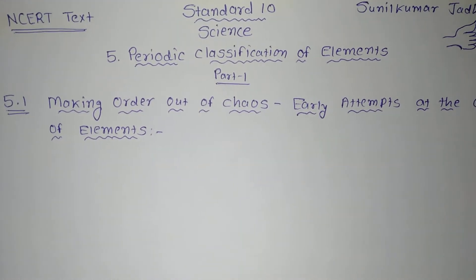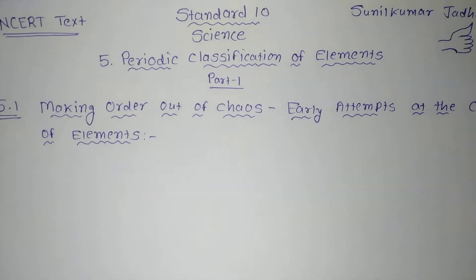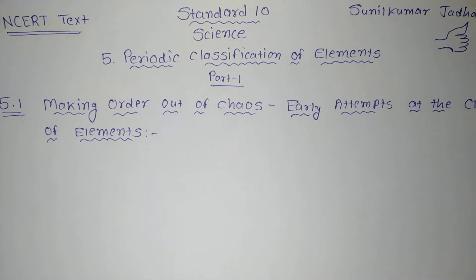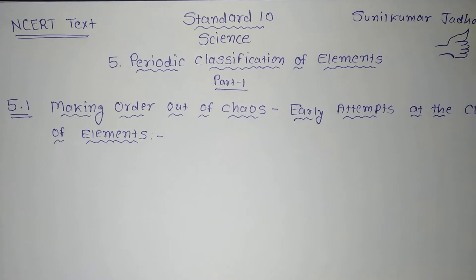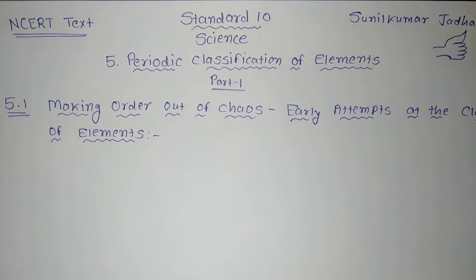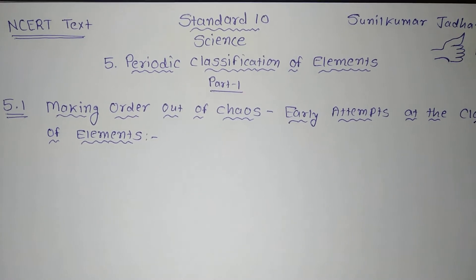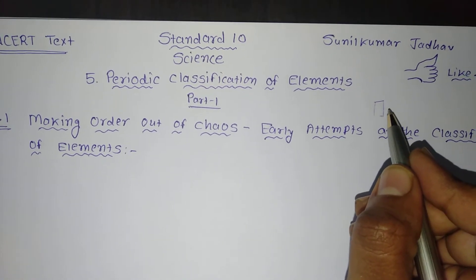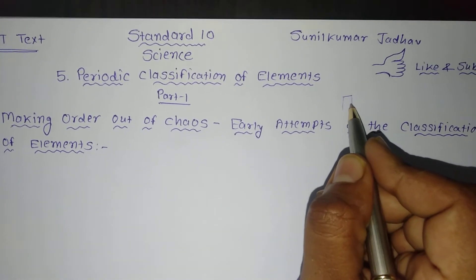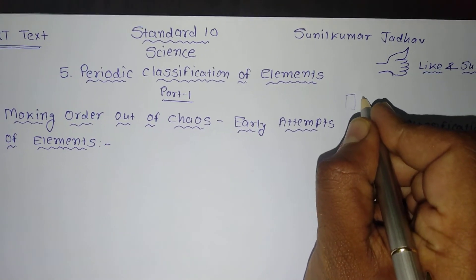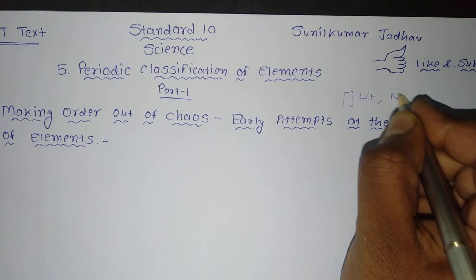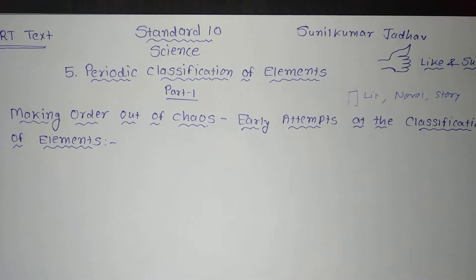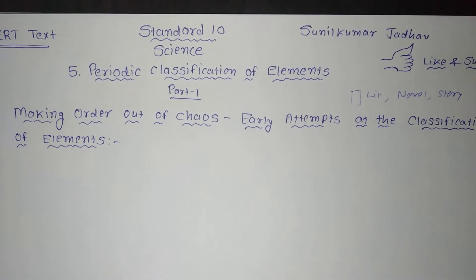Scientists were finding out ways to arrange elements in a proper manner. They started looking for some pattern in their properties on the basis of which they could study such a large number of elements. Just as we arrange books in a particular shelf to find them easily — in a library, literature is kept somewhere, novels somewhere else, and story books elsewhere — similarly, periodic classification should be done so that elements can be easily understood and learned.